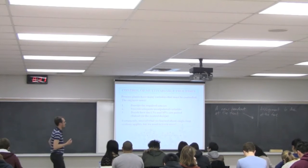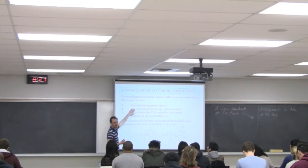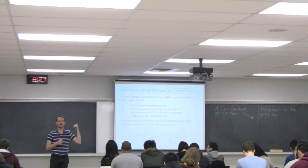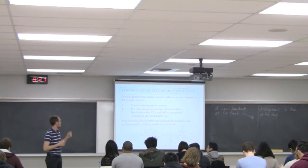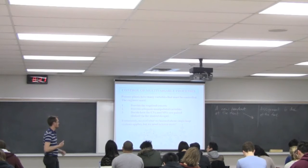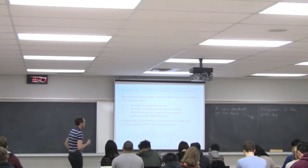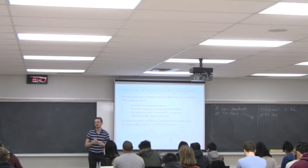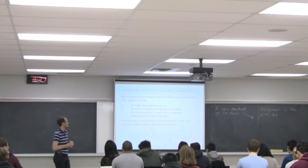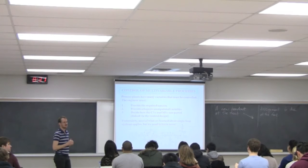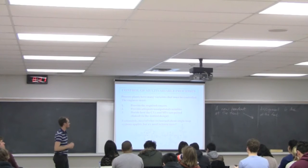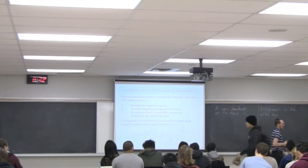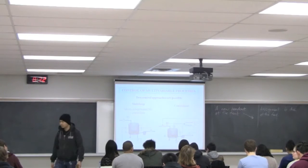We need to provide the number of sensors and the number of manipulated variables. In single loop control, you always have one sensor and one manipulated variable. With multiple loop control, we need to step that up. One of the hardest parts is deciding which manipulated variable is going to change which control variable and how we pair them up. We'll see that through a series of examples.